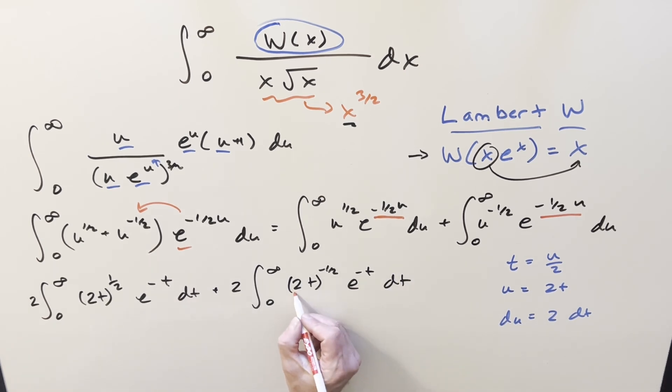One last thing, I don't really want this 2 here. Now over here in this one, 2 to the one half, that's going to be square root of 2. So out front, I can write this as 2 square root of 2 and just get rid of this right here. Same kind of thing on this one, but it's a minus one half. So that's 1 over square root of 2. So we can write this as 2 over square root of 2 and get rid of this.